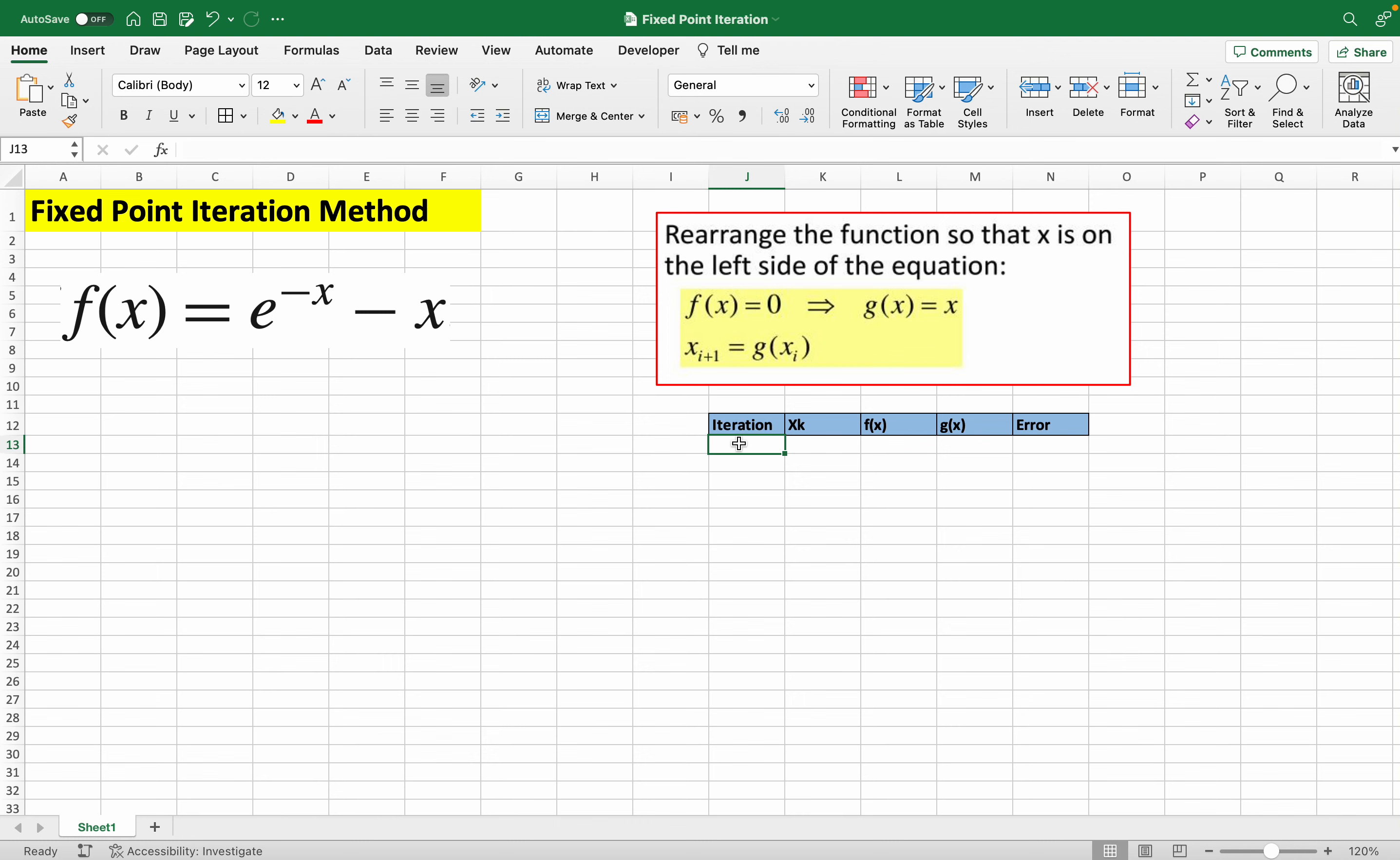In this video I'll be giving you a quick tutorial on using the fixed point iteration method to find the root of a function. Here we have our function where f(x) equals e raised to the negative x minus x, and we have to find the root of that function.